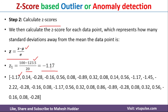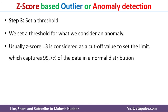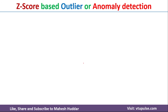Once you calculate the Z-scores, the next step is to set the threshold. In the Z-score-based method, we typically set the threshold at 3. Anything less than −3 or greater than +3 is considered an anomaly or outlier; everything else is a proper value. This threshold covers 99.7% of values as normal data, with the remaining 0.3% considered outliers.